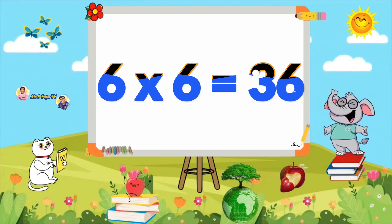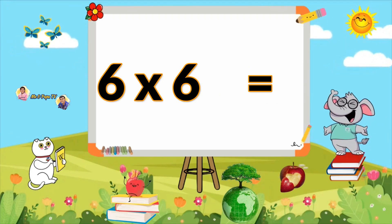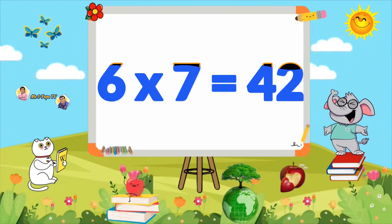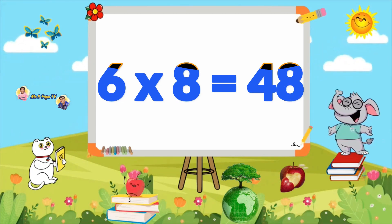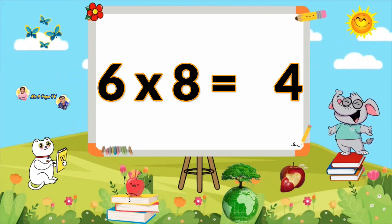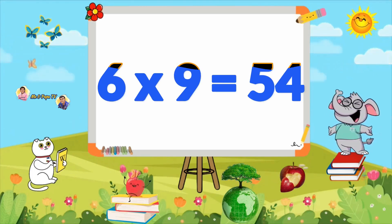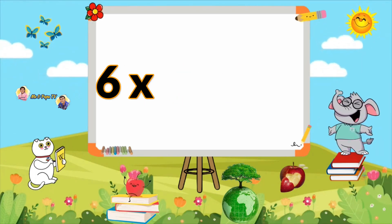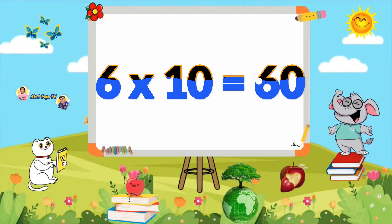6×6=36, 6×7=42, 6×8=48, 6×9=54, 6×10=60.